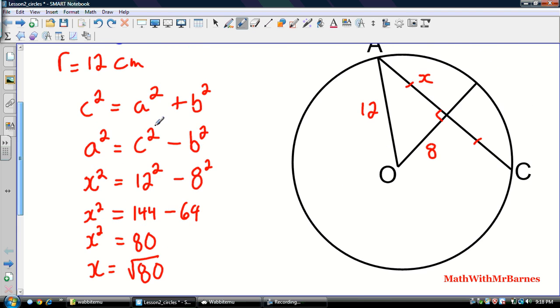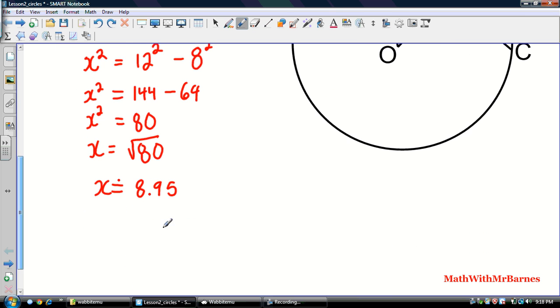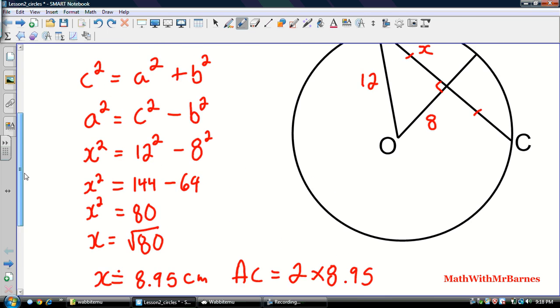So 8.95, that's my distance from A to this middle part right here. So if I want to find the entire chord AC, so the entire chord AC is going to be equal to 2 times 8.95. So that's somewhere in the ballpark of 17.9 centimeters. The length of our chord is 17.9 centimeters.